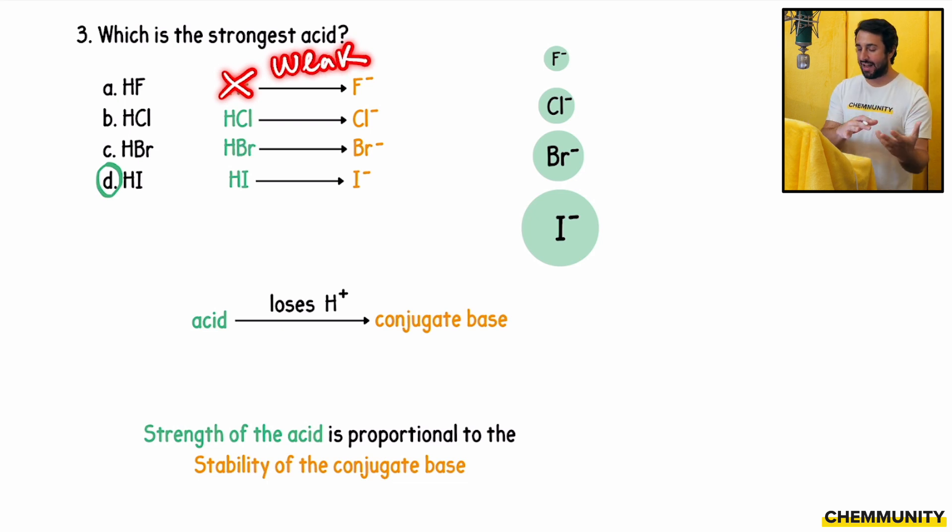It still can act as an acid, but because the fluoride ion is so much less stable than the iodide, HI is an extremely strong acid. It will very readily lose that proton because the thing that you get is so stable. That one's going to be HI.